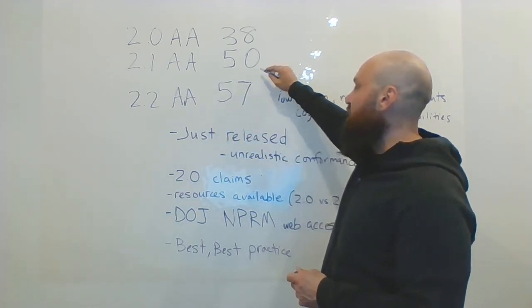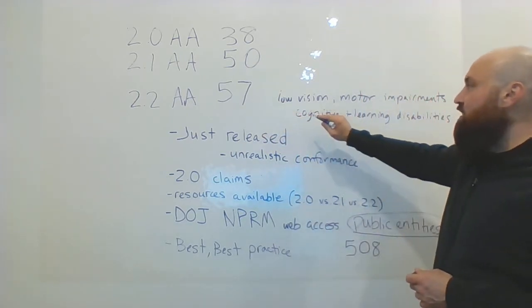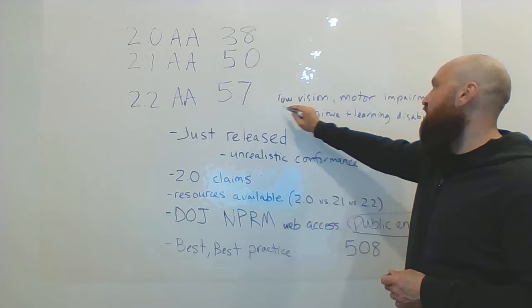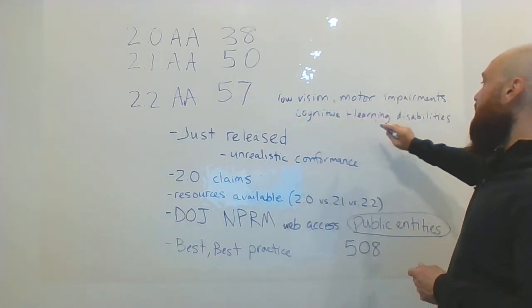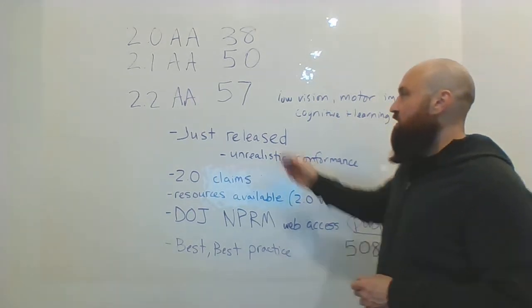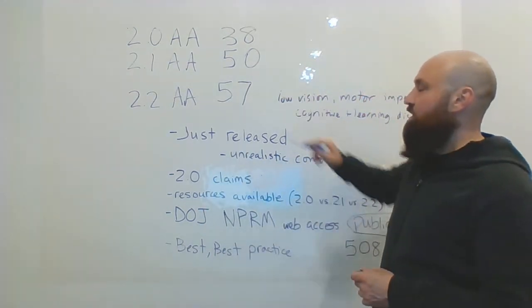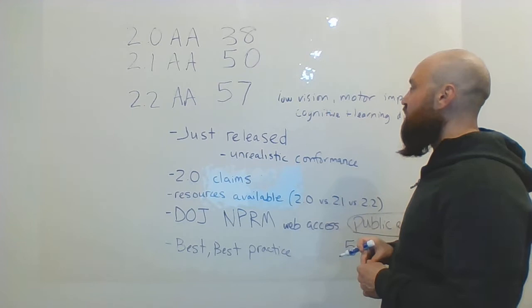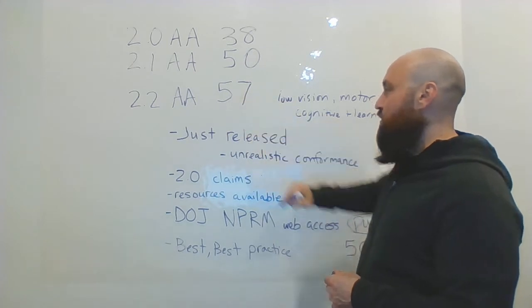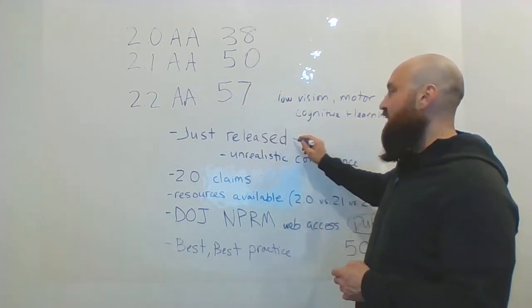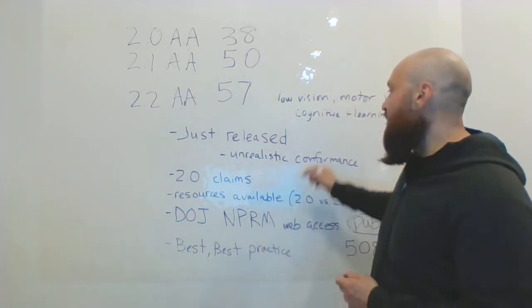With 2.2 we are adding seven additional success criteria to 2.1. These additional success criteria help address issues with people that have low vision, people that have motor impairments, and or cognitive and learning disabilities. So 2.2 really does help accessibility. There are only seven additional things to incorporate in your website to be 2.2 AA conformant, but as I just stated, 2.2 as of the day of this video hasn't even been released yet.